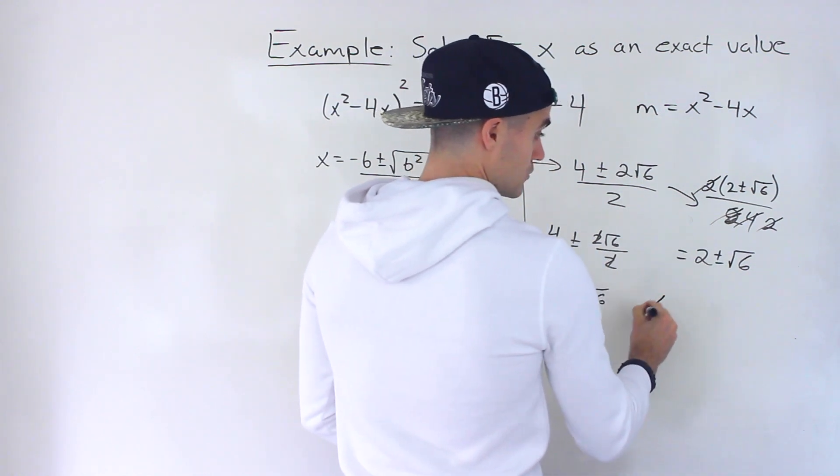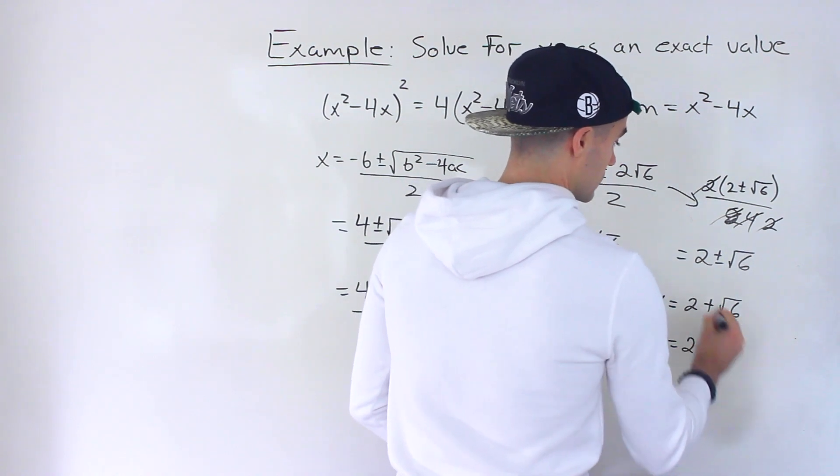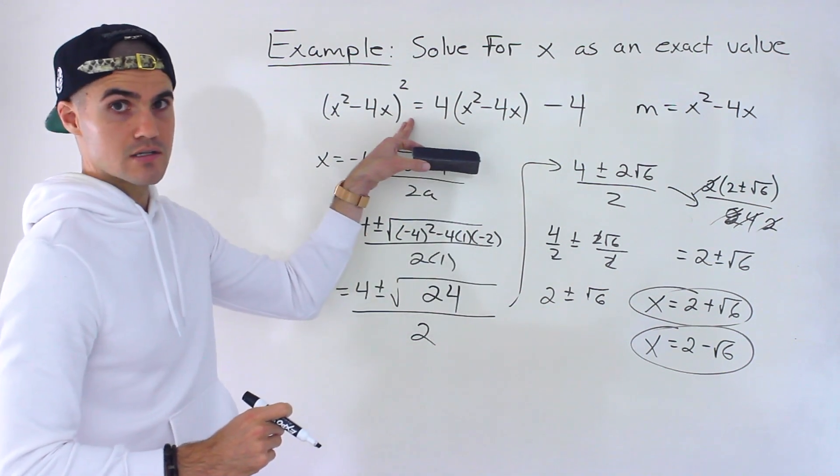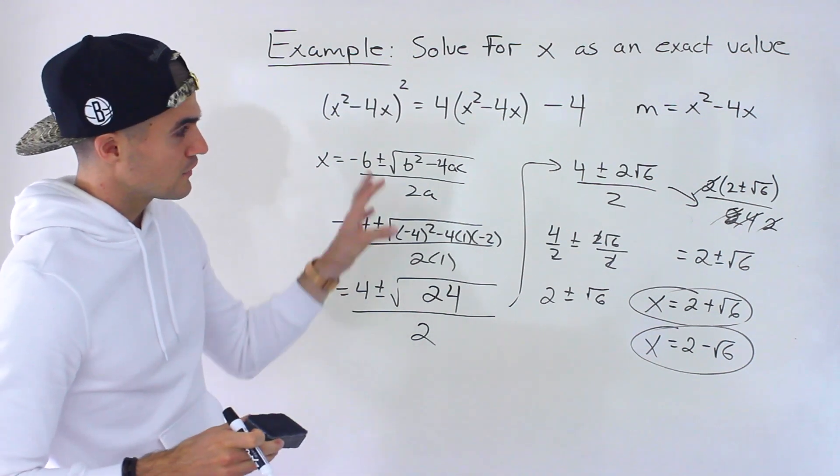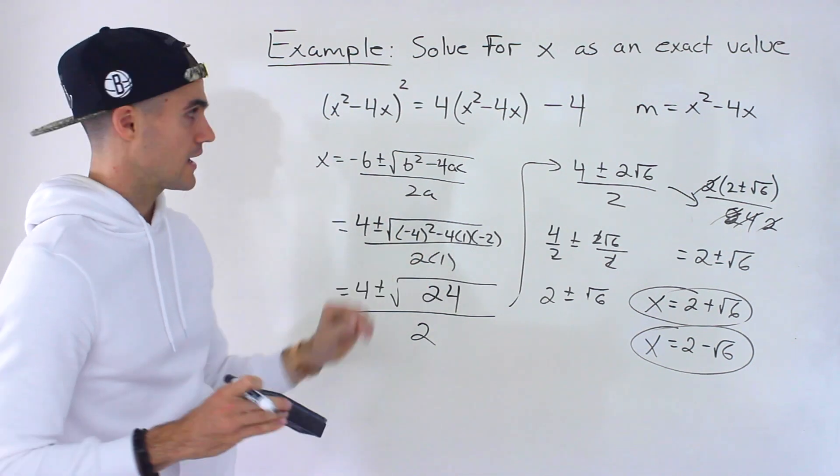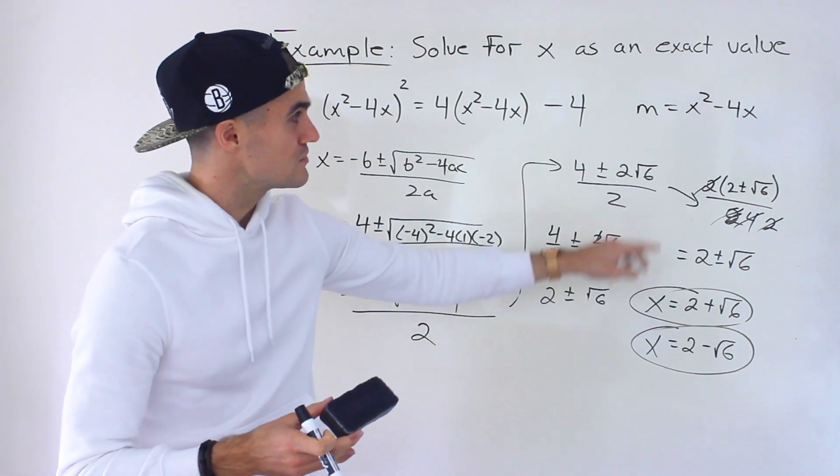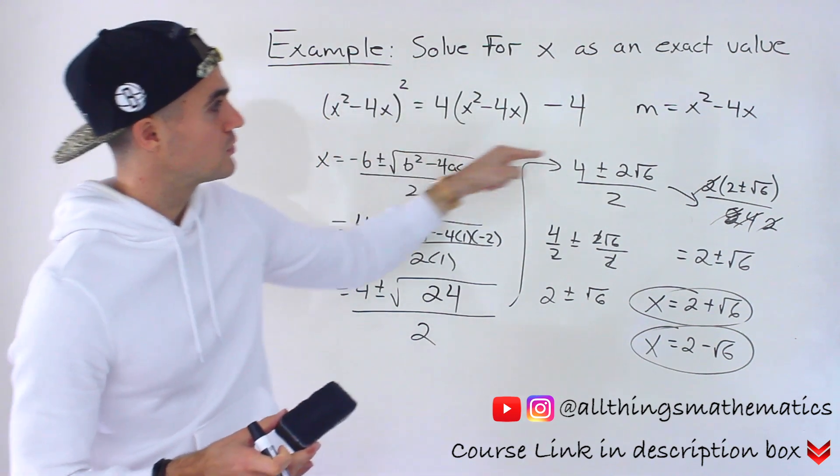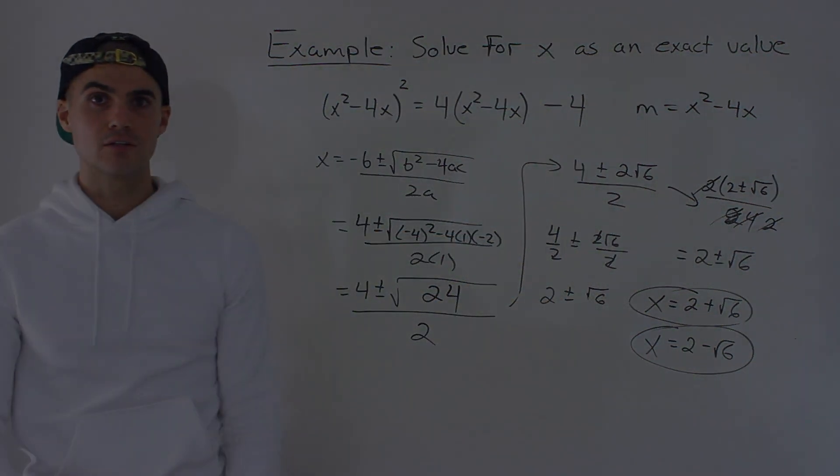So final answer whichever way you do is 2 plus or minus root 6. So the two solutions are 2 plus root 6 or 2 minus root 6. Those are the two solutions as an exact value to this polynomial equation. So you got to be careful with these kinds of questions this is a very unique case a very special case but something like this can come up potentially. So if you expand everything you're getting stuck and the solutions are going to be unique values maybe look in the original equation of where maybe you can bring in another variable and make it more simple in order to get those exact value solutions.